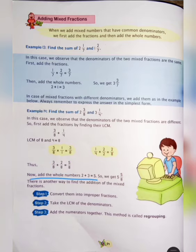Now add the whole numbers. The whole numbers are 2 and 3, so 2 plus 3 is equal to 5. So we get the answer 5 and 5 upon 8. There is another way to find the addition of mixed fractions.